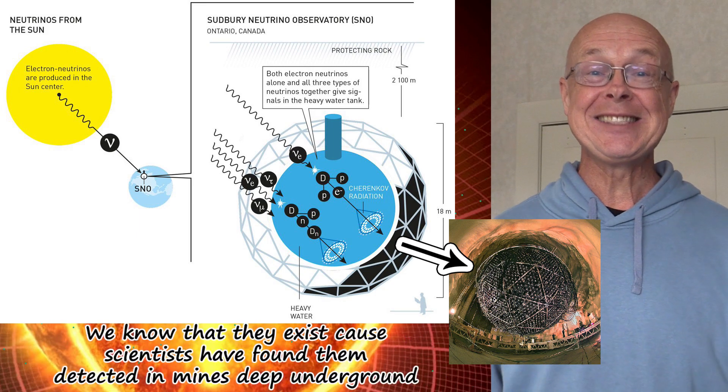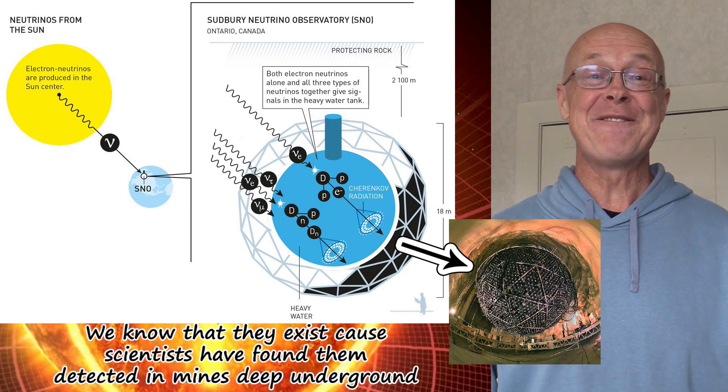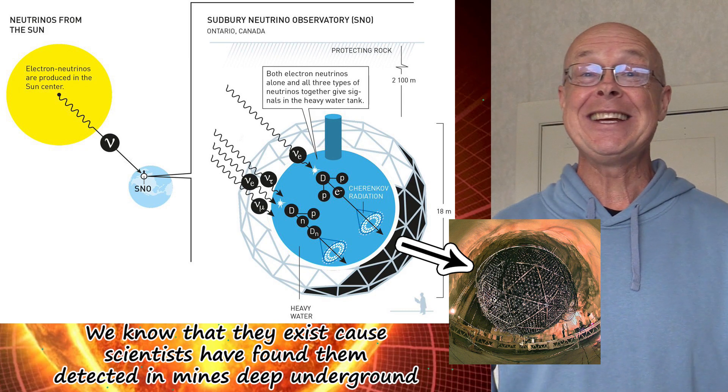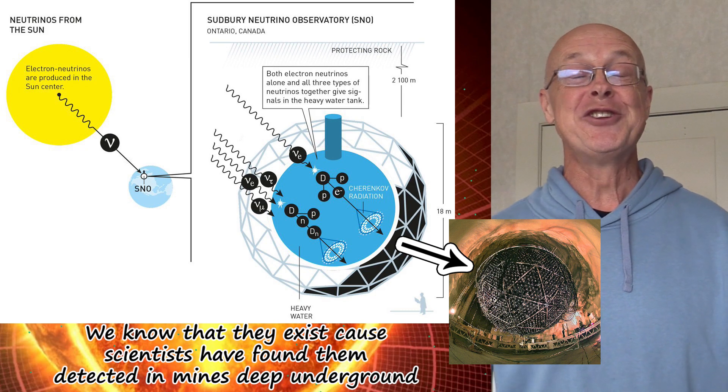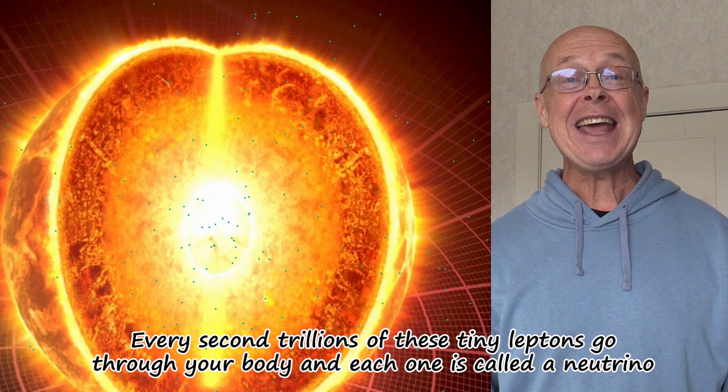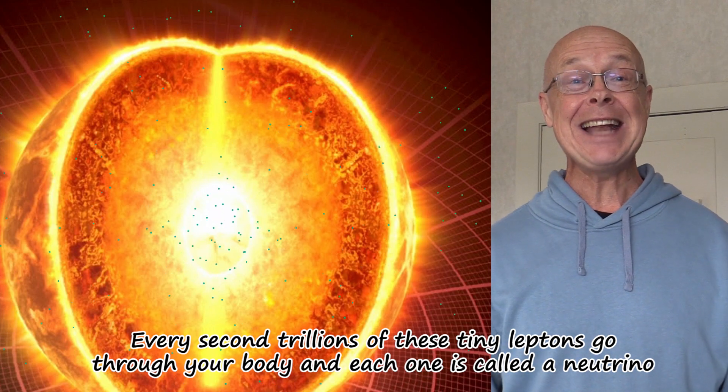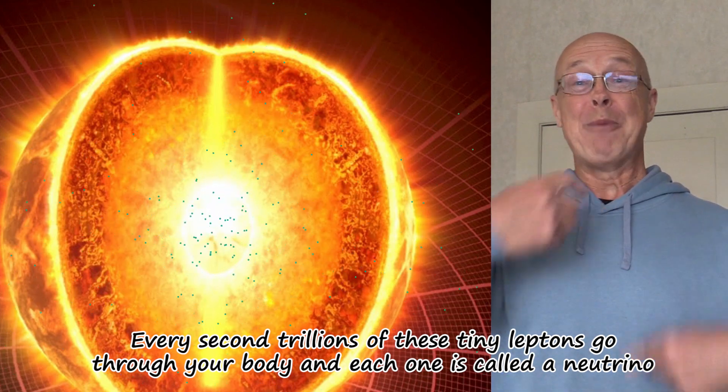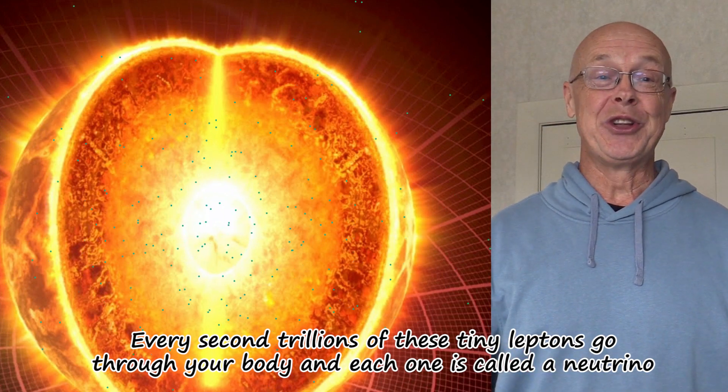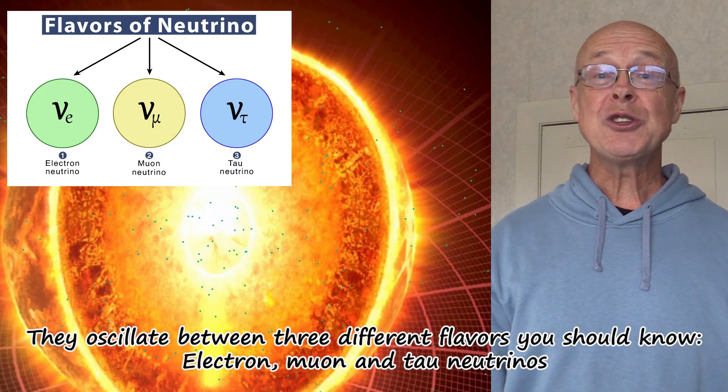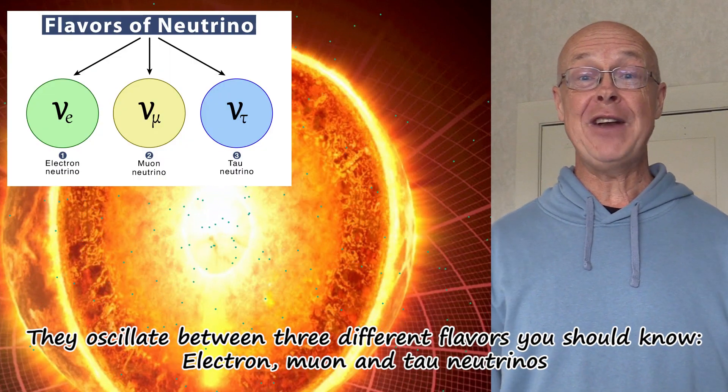We know that they exist because scientists have found them detected in mines deep underground. Every second, trillions of these tiny leptons go through your body, and each one is called a neutrino. They oscillate between three different flavours you should know.